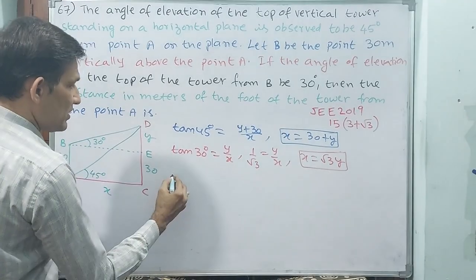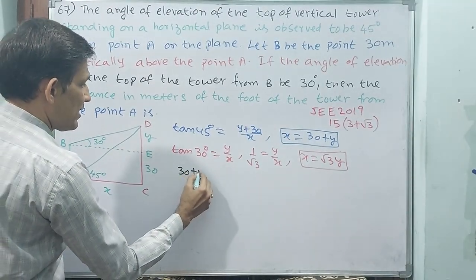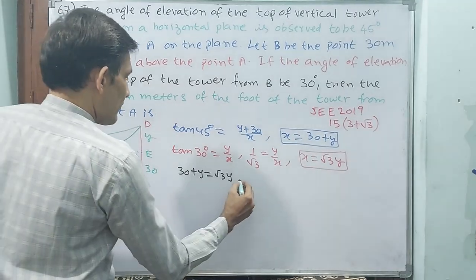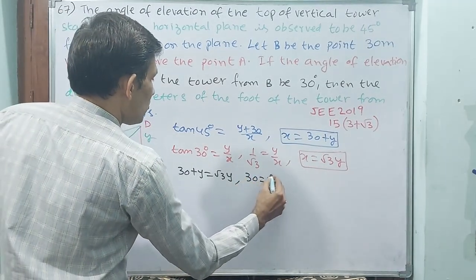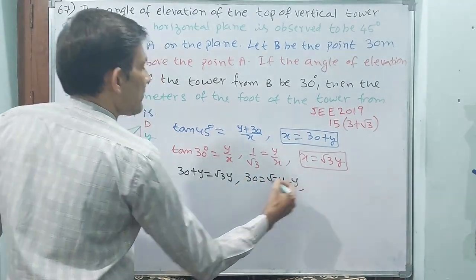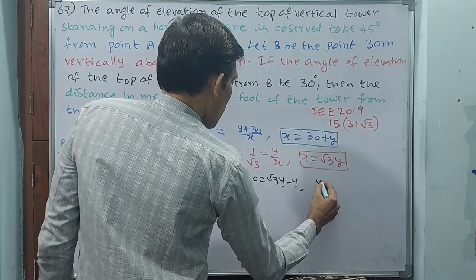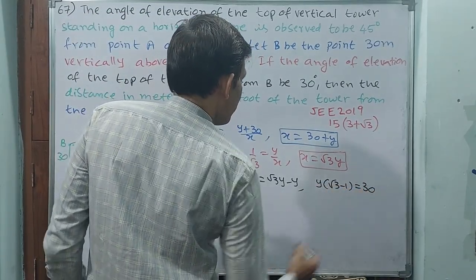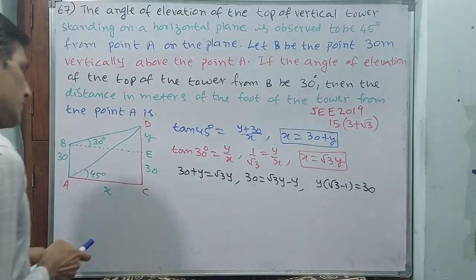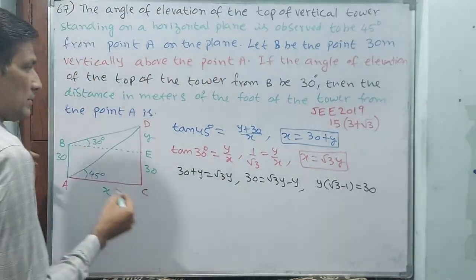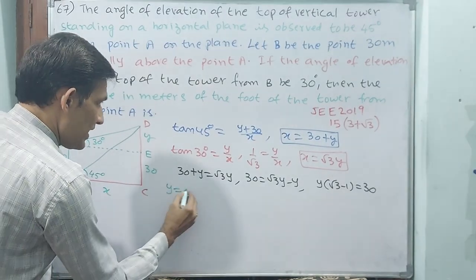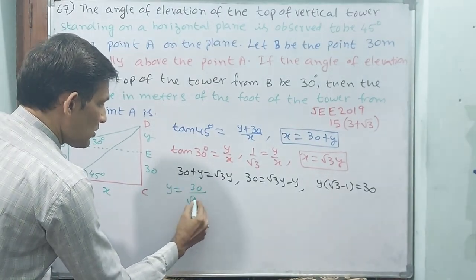Solve these two. That means, 30+y equals √3y. So 30 equals √3y minus y. If you take y out, (√3-1)y equals 30.